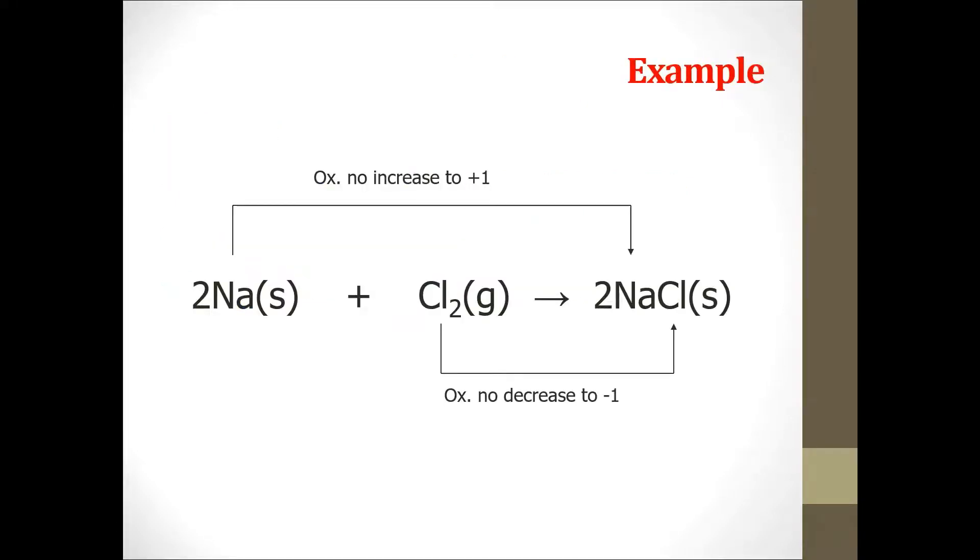For example, let's look at this reaction. You can see that the sodium atom has an increase in oxidation number from 0 to positive 1. And chlorine gas is reduced to become sodium chloride and the oxidation number decreases to negative 1.